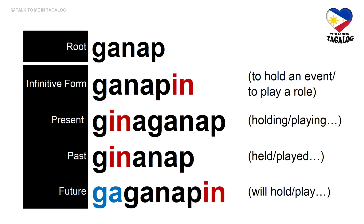Root word: ganap. Infinitive form: ganapin — meaning to hold an event or to play a role. Present tense: ginaganap — holding an event or playing a role. Past tense: ginanap — held an event or played a role. Future tense: gaganapin — will hold an event or will play a role.